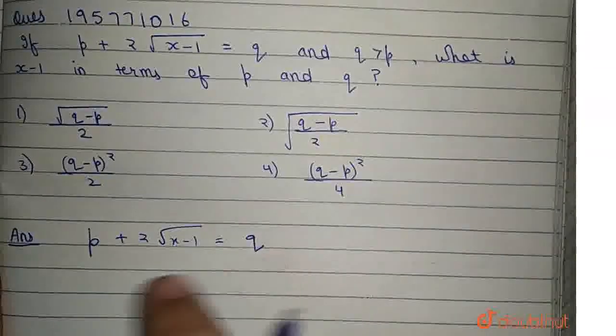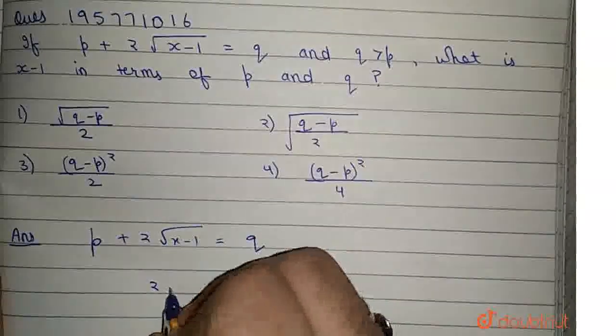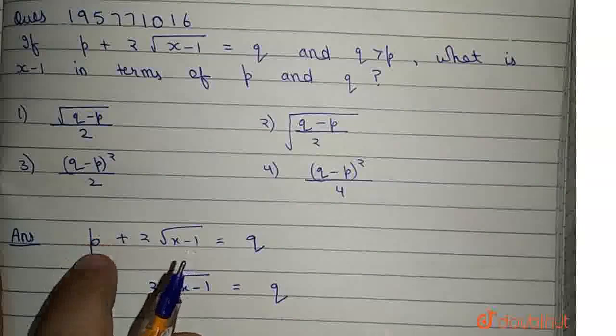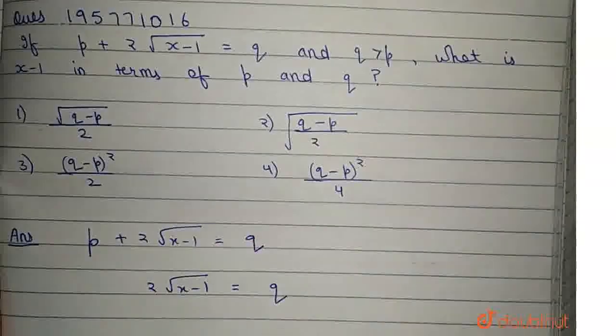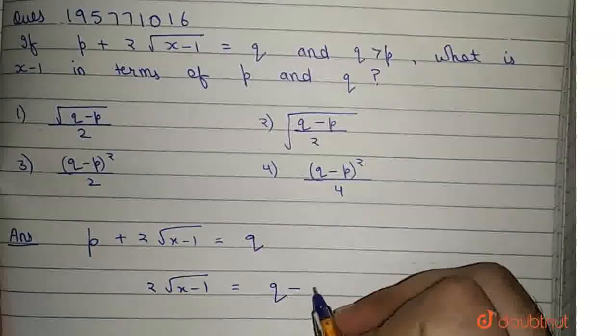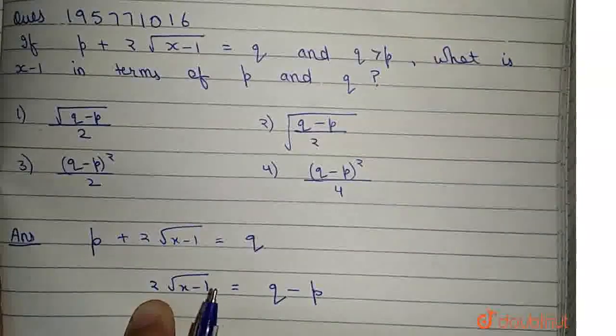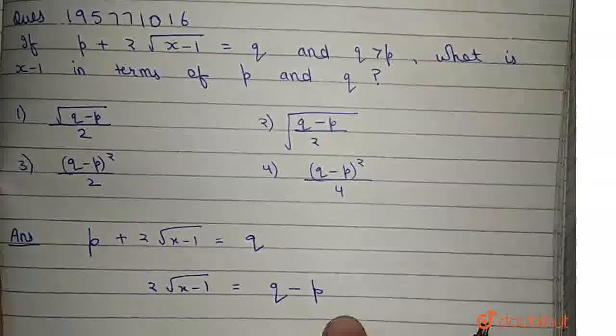Now, taking p to the right hand side, it becomes 2 square root of x minus 1 equals q minus p. Since p is in addition here, when it goes to the right hand side, it becomes subtraction. The 2 is multiplied here, so when it goes to the right hand side, it will divide.